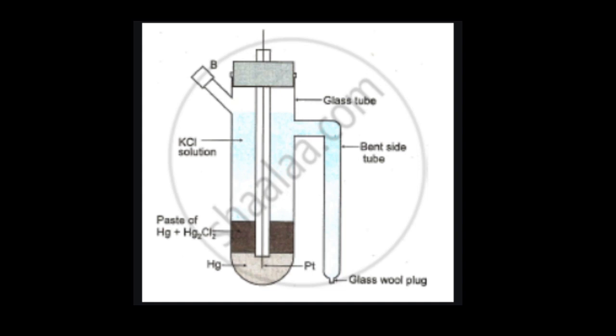So let's first look at the construction of the Calomel electrode. Calomel electrode is a wide glass tube in which mercury is taken at the bottom, on which a paste of Calomel is placed. A platinum wire is inserted into the mercury. The wide glass tube contains the saturated solution of KCl, that is one molar KCl.